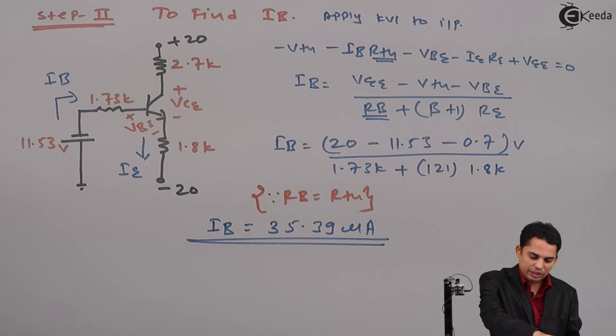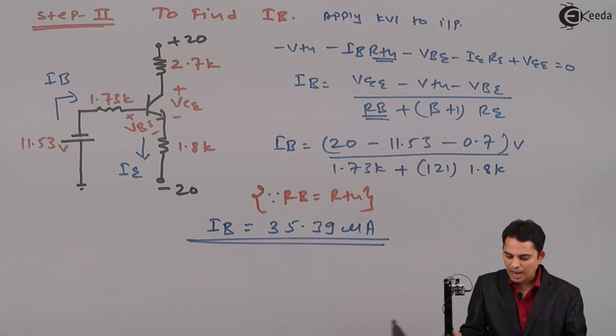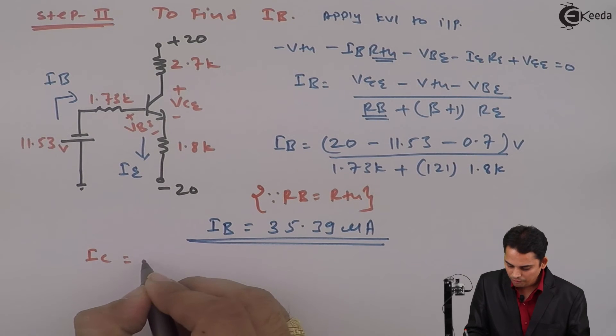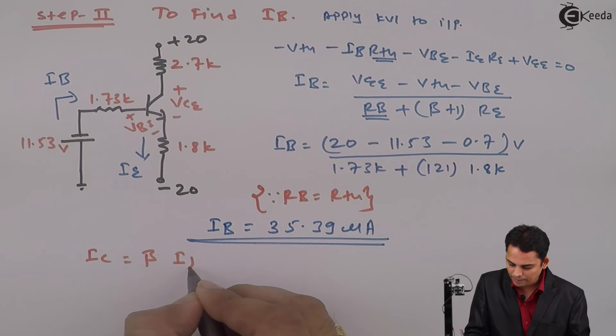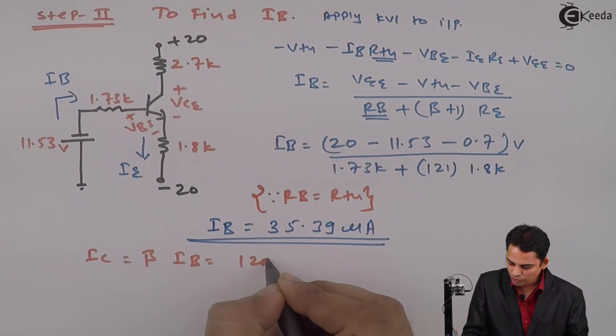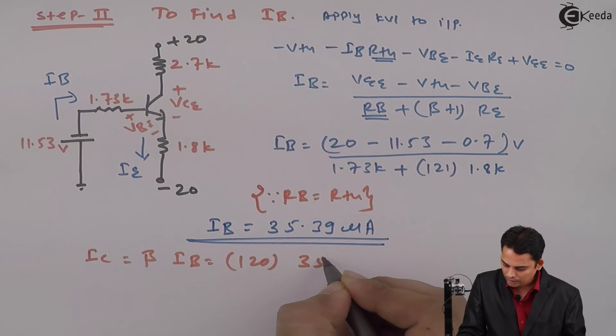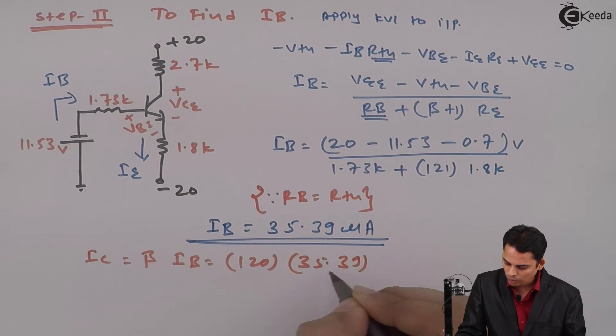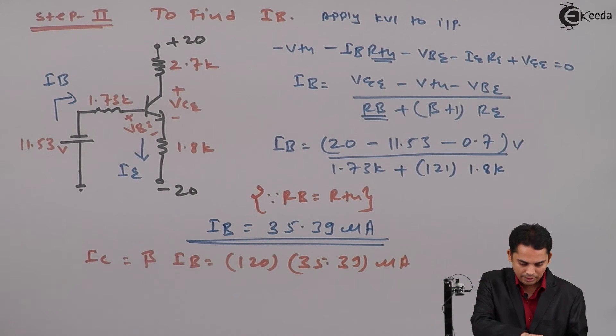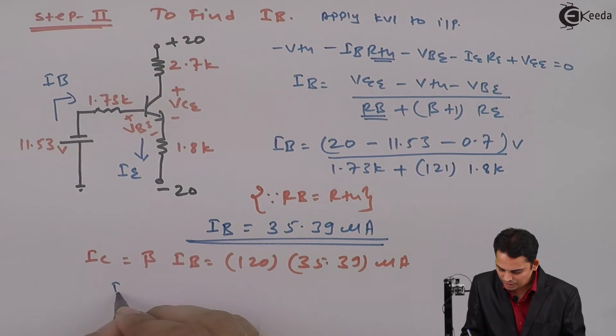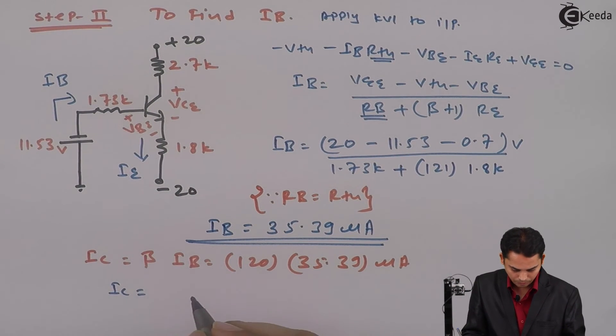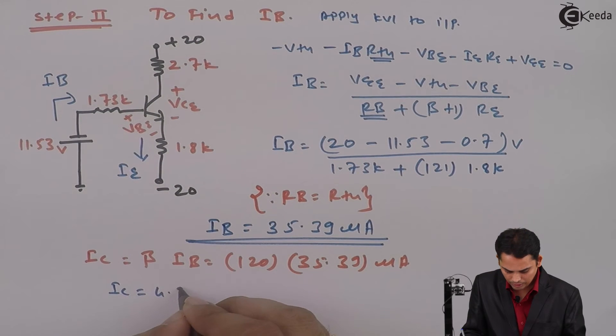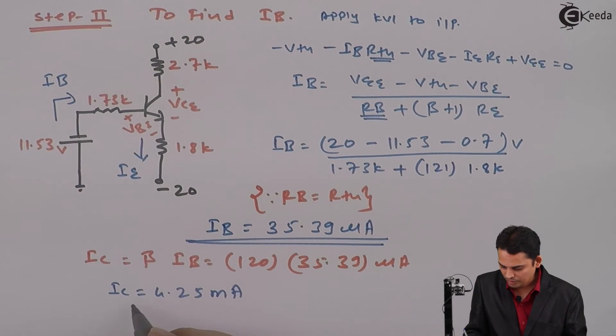Similarly in same step, we will find out IC which is nothing but beta multiplied by IB, which is 120 multiplied by 35.39 micro amperes, and hence IC is equal to 4.25 milli amperes.